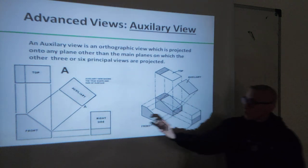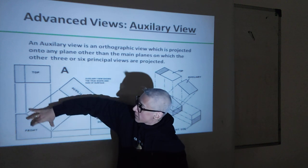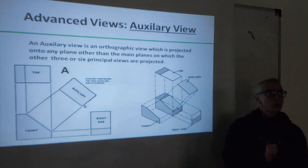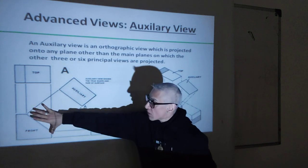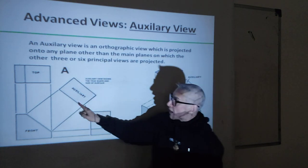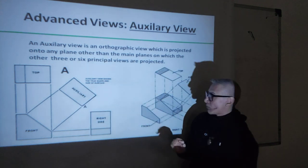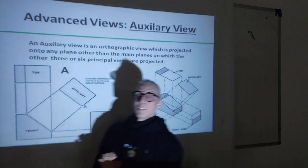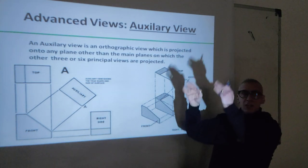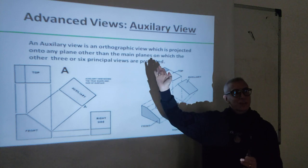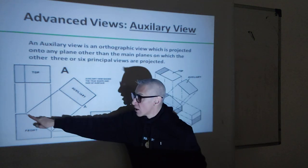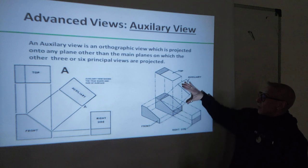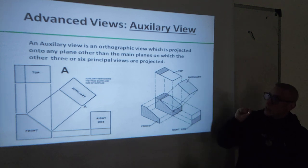It is to show this detail so that we don't see it foreshortened in the other views. Sometimes we need to understand exactly how it looks. So wherever the inclination is, we take straight lines at 90 degrees and draw it exactly as it is. If the inclined plane is somewhere else, the auxiliary view will be over there. It's always at an inclination depending on this surface or surfaces, and you could have more than one in a drawing.